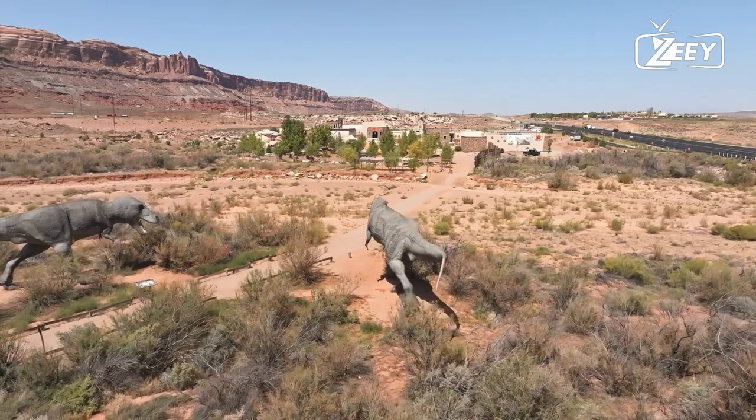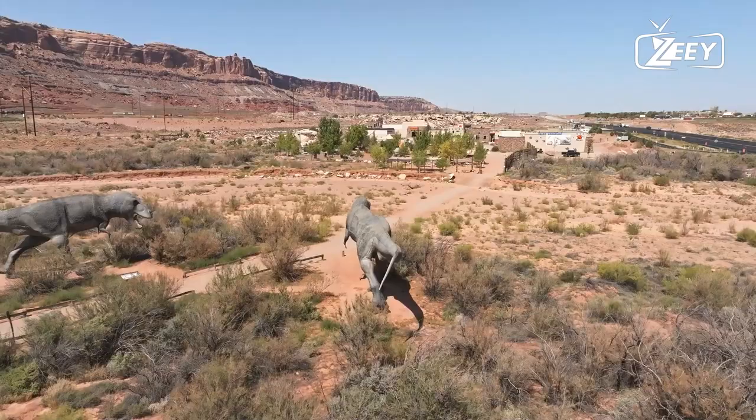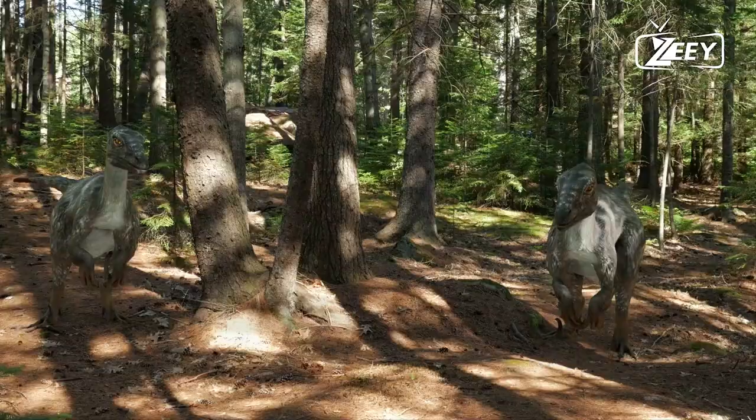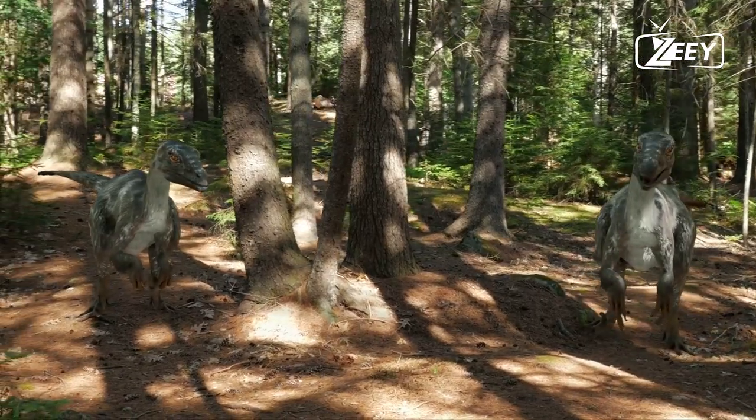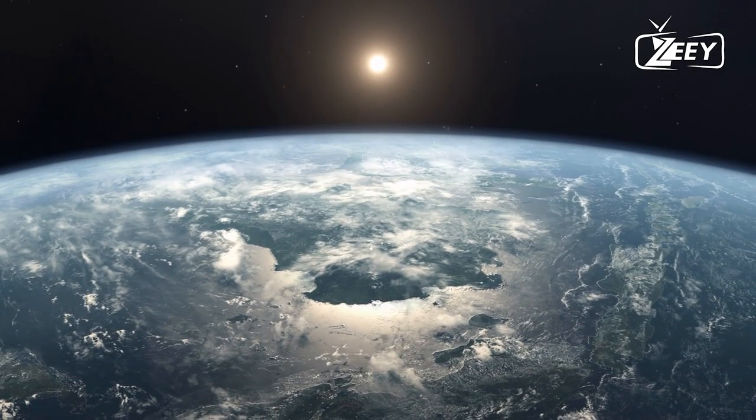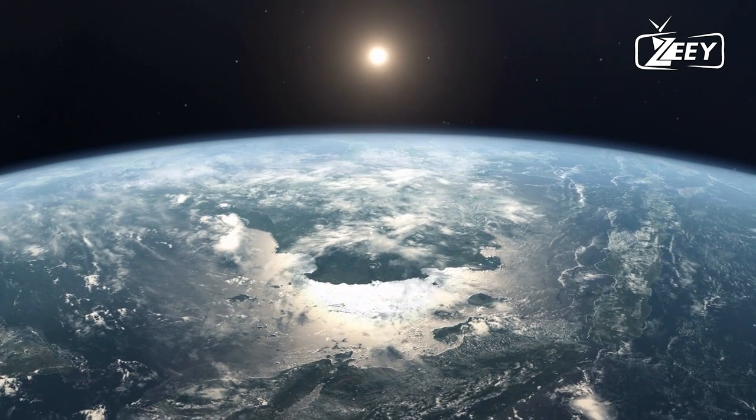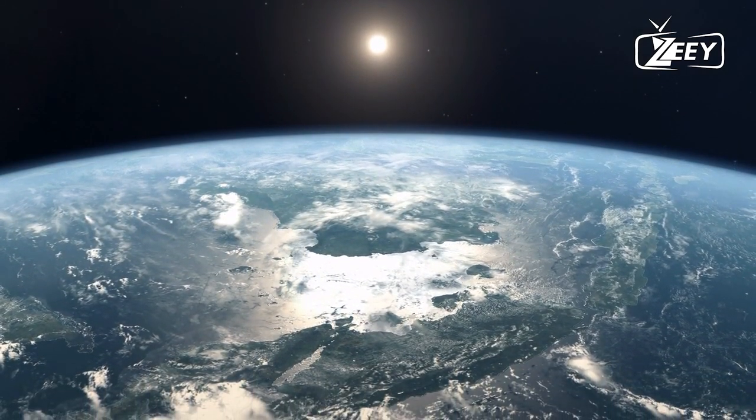The early Paleogene was characterized by the proliferation of mammals, birds, and reptiles, many of which were quite different from the species we see today. The ecosystems of the time were also different, with different food webs and interactions between species that began to evolve and adapt.